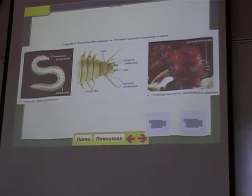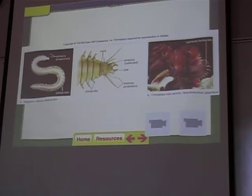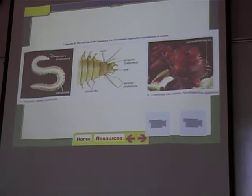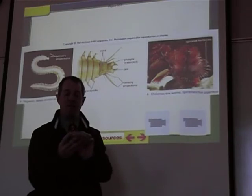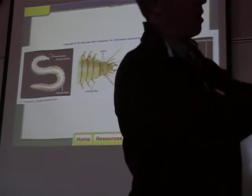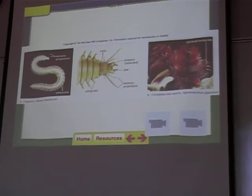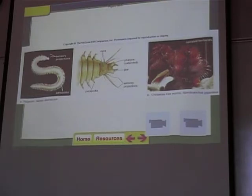The worms will build a tough shell and live inside it. You can see a little opening where the worm lives — they built a tough shell made of calcium carbonate, which is very hard, and they stick their heads out to filter the water. These are called polychaete worms, and I've got two videos of them. They live in different ways. This one's called a sea mouse — it's actually a worm.